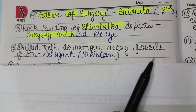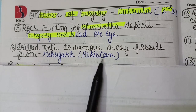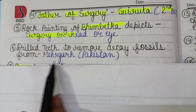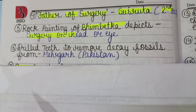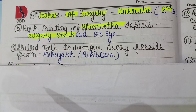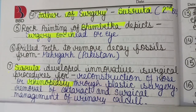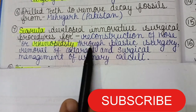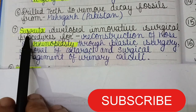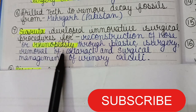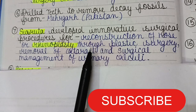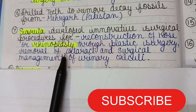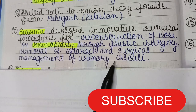Drilled teeth fossils found at Mehrgarh, Pakistan show that dentistry was practiced in ancient times — holes were drilled in teeth to remove decay. Sushrut also developed an innovative surgical procedure for reconstruction of the nose, known as rhinoplasty — plastic surgery in ancient times. He also performed removal of cataracts and surgical management of urinary calculi.